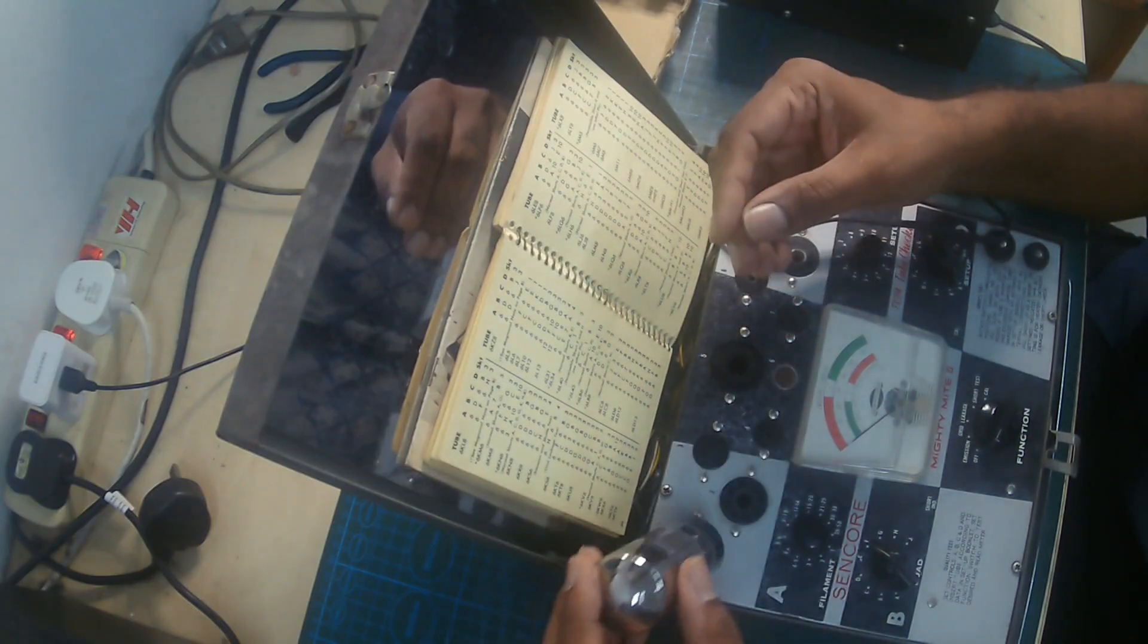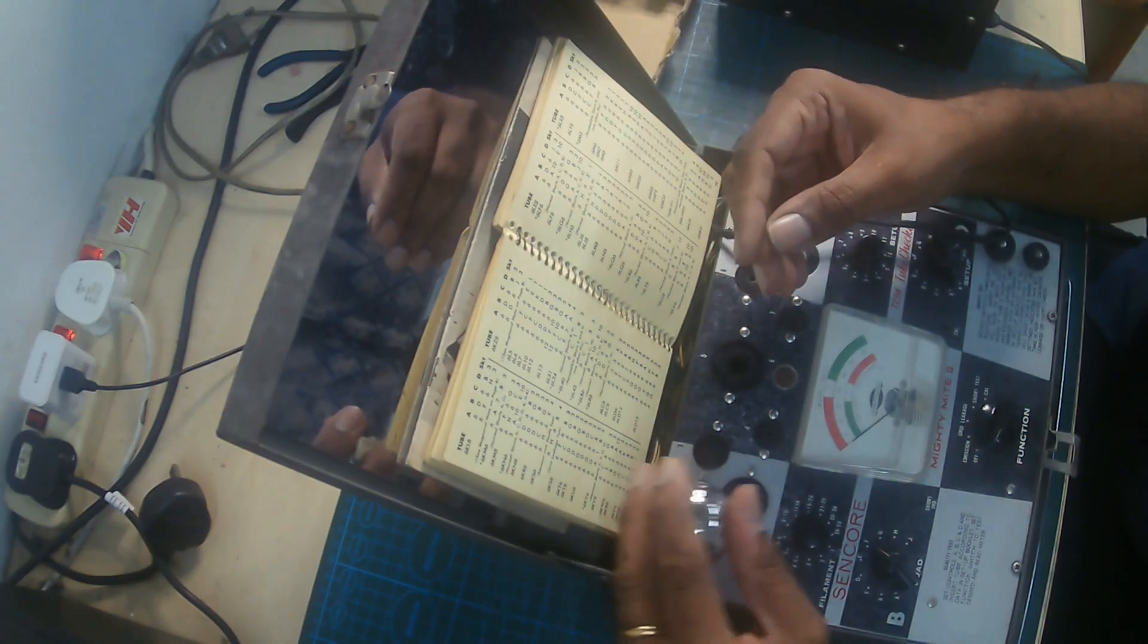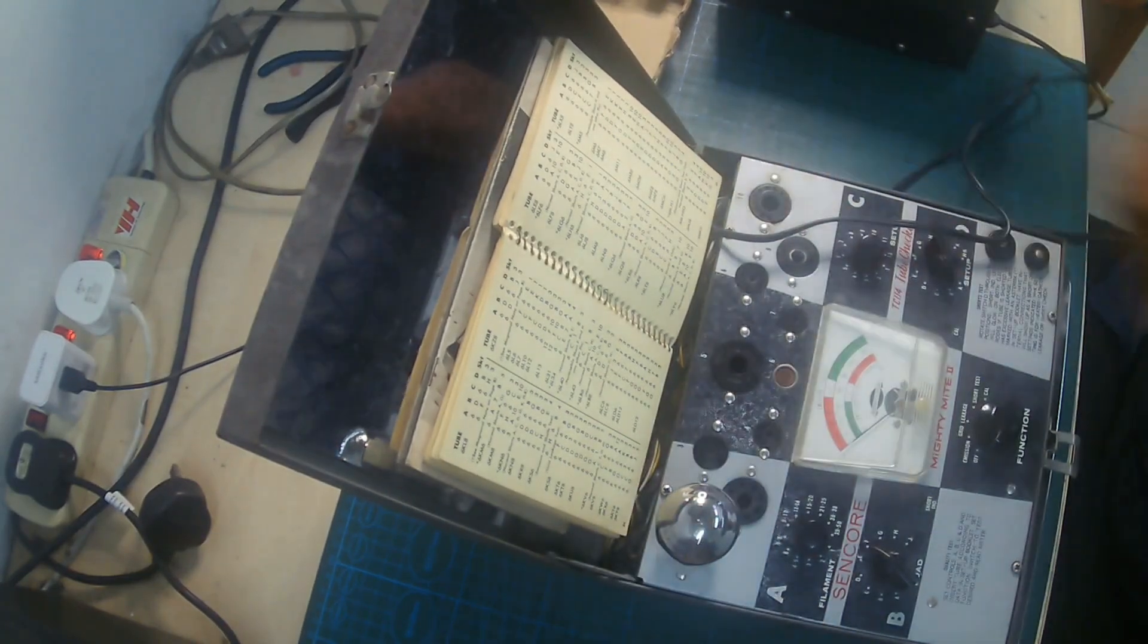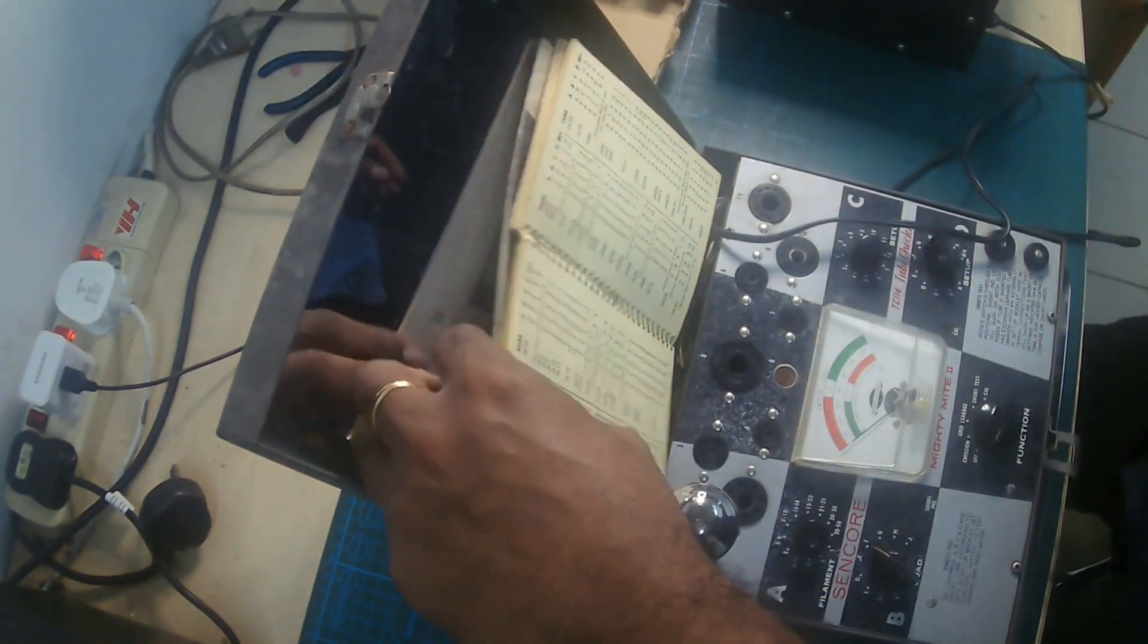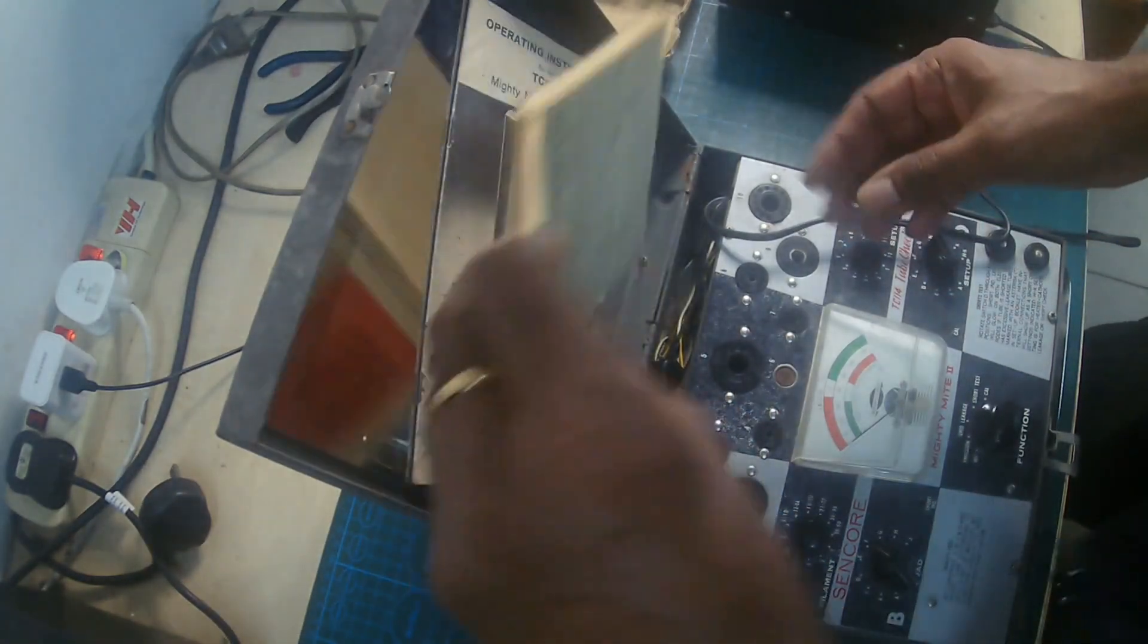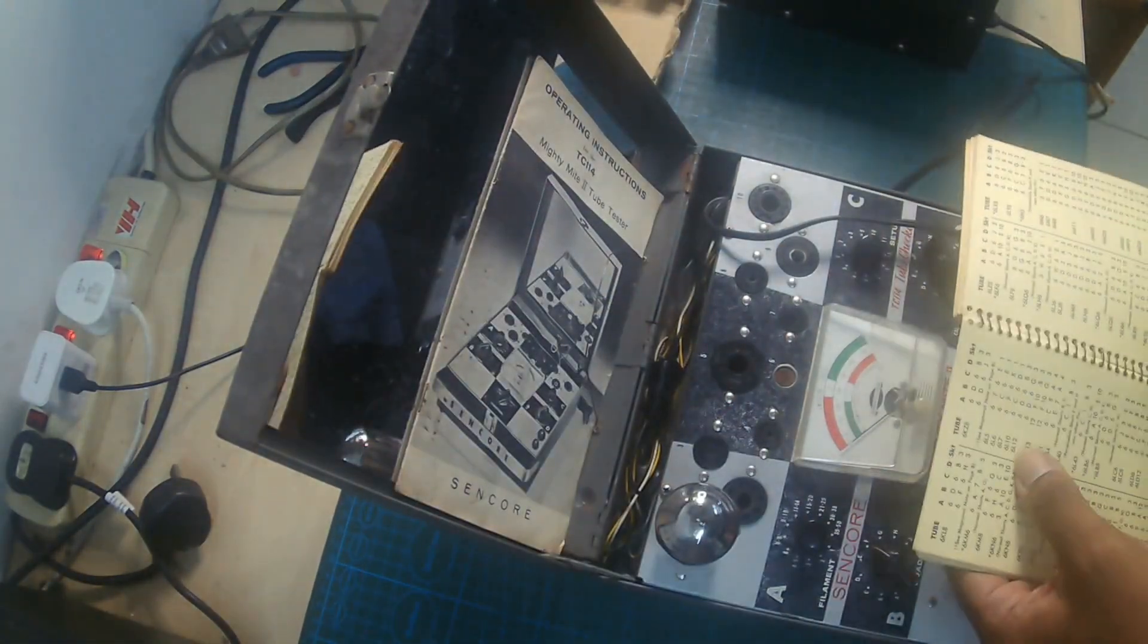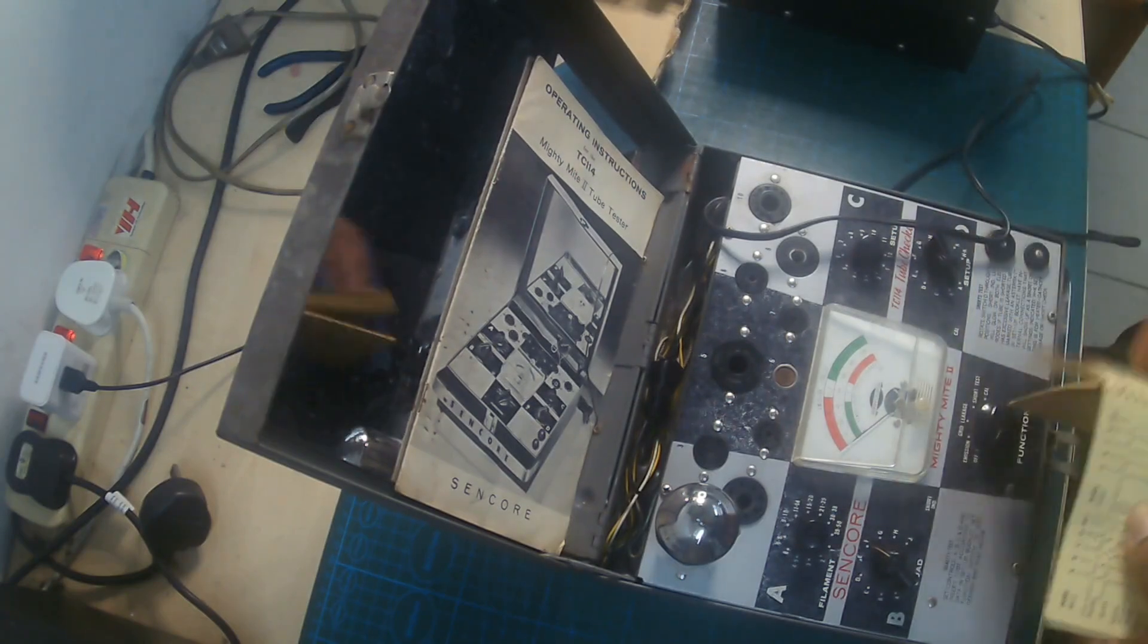First I take the 6L6 tube and insert it into the tube socket. I will need to select the correct parameters for 6L6 tube. I look for 6L6 in this booklet and then set the parameters accordingly. This booklet contains the parameter settings for every type of tube. Once the parameters are set, we can begin the test.